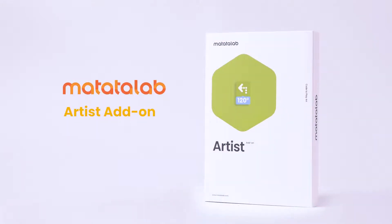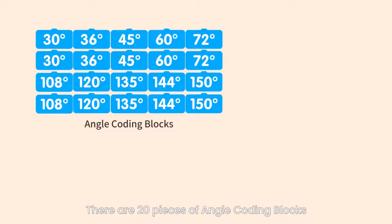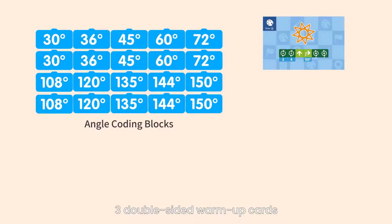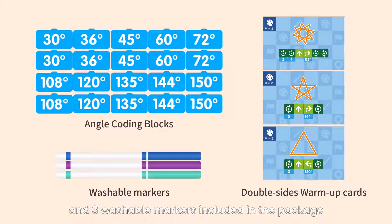MatataLab Artist Add-on. There are 20 pieces of angle coding blocks which contain 10 angles, 3 double-sided warm-up cards, and 3 washable markers included in the package.